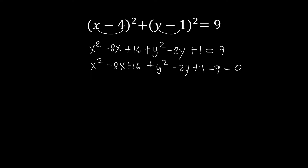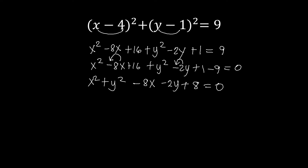We arrange starting with x squared, then y squared. Remember when you change the position of a term, you must bring its sign along with it. So we have minus 8x, then minus 2y. Then we combine the constants: 16 plus 1 is 17, minus 9 equals positive 8. So we have plus 8, equal to 0. This is now our general form of the equation of the circle.